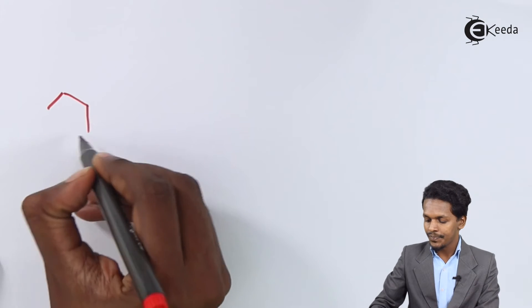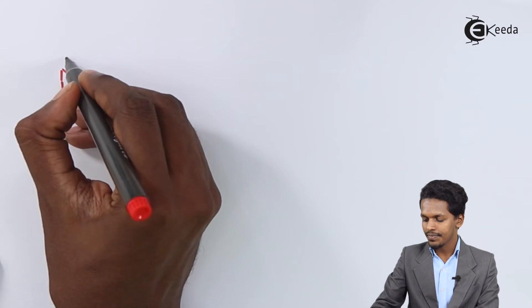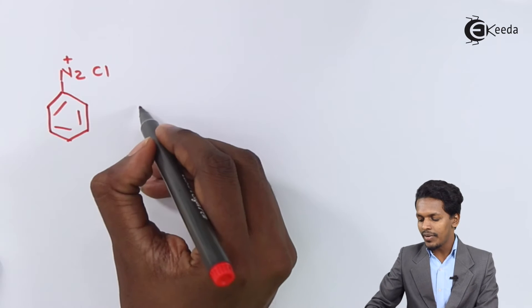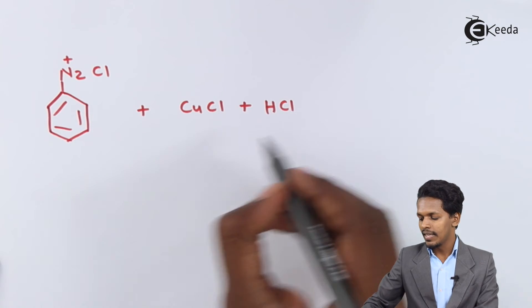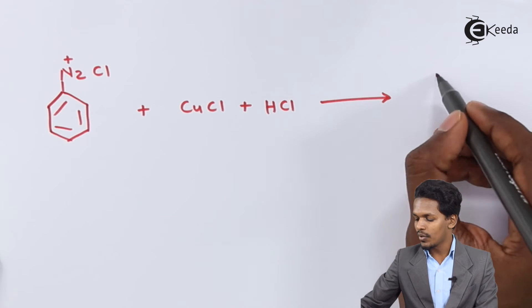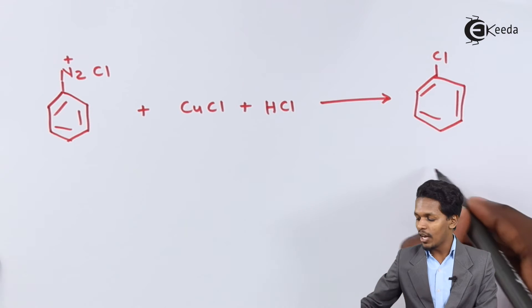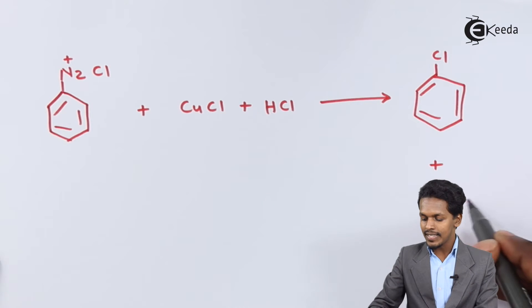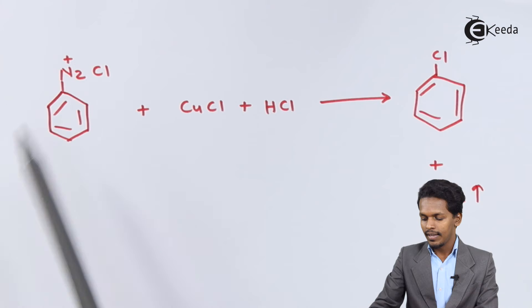As we discussed in the previous lecture, we can convert aniline into diazonium chloride. Considering the same example — suppose we take freshly prepared benzene diazonium chloride and treat it with cuprous chloride along with HCl. The main product we get is chlorobenzene, with nitrogen removed as a by-product in the form of a gas. So we can easily convert benzene diazonium chloride to chlorobenzene.